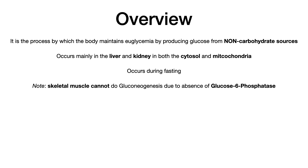Gluconeogenesis occurs mainly in the liver and the kidney, and it occurs both in the cytosol and the mitochondria. This pathway typically occurs during fasting when the body needs to continue making glucose but has no input glucose. Of note, skeletal muscle cannot undergo gluconeogenesis due to the absence of glucose-6-phosphatase, which is a key enzyme involved in gluconeogenesis.